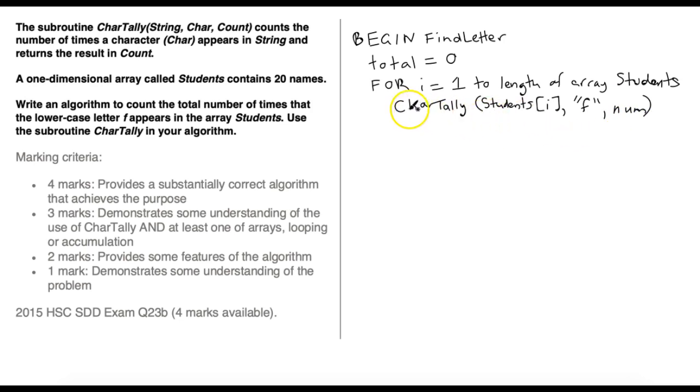Now, what that's going to do is return the total number of times the letter F occurs in this particular string, in the particular name that has been accessed in the array, or the particular name we're looking at in this iteration loop. That's going to return into the variable num. So what we need to do is add num to the total that we're keeping for all of the names. So we can just say total equals total plus num. And at the end of the loop, we can just say next I, so the counter will go up by one.